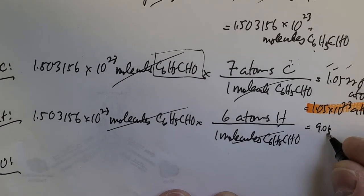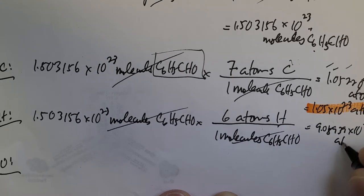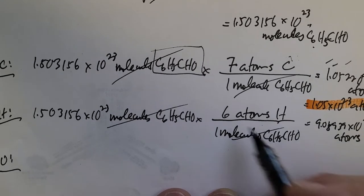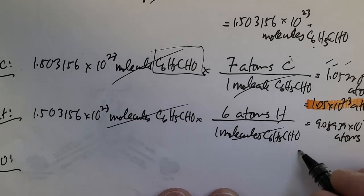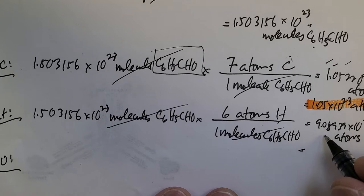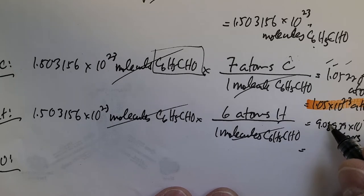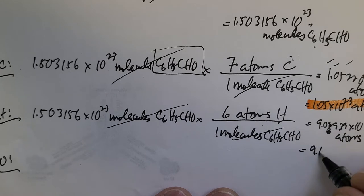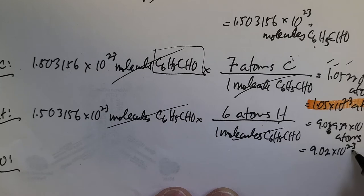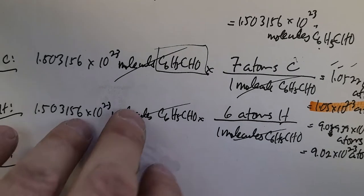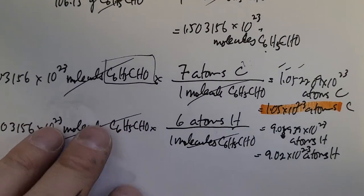Rounded off to three significant figures: nine point zero one eight — the eight bumps the one up by one — so that gives us 9.02×10²³ atoms of H.